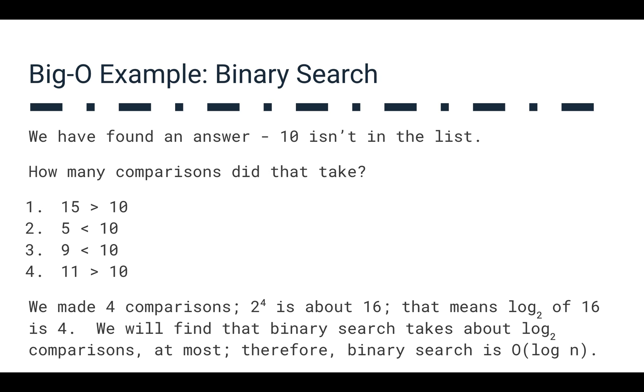So we found an answer: 10 isn't in the list, but it didn't take that many comparisons. We're not looking at a huge amount of data here, but it only took a handful of comparisons to try to figure out where we are here. So 15 is greater than 10, 5 is less than 10, 9 is less than 10, and 11 is greater than 10. So we only made four comparisons to determine whether or not this is in the list.